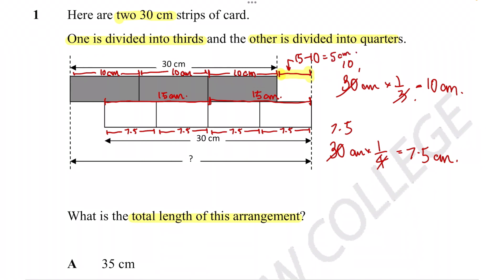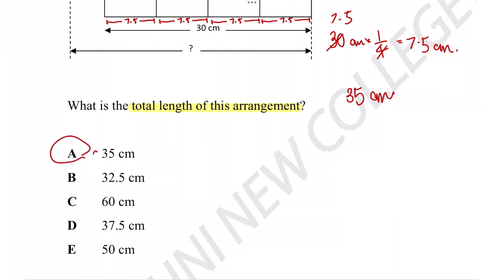So we now have all the information we need to figure out the length of this arrangement. We know that this is equal to 30 and this is equal to 5, so the total will be 35 centimeters. And we can see that is going to be option A.